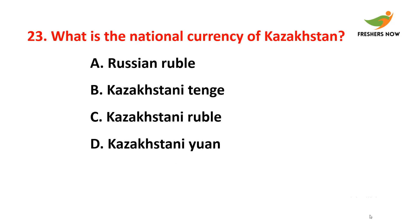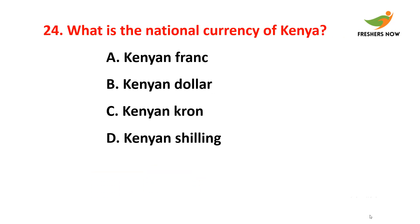Twenty-first question: What is the national currency of Germany? The answer is option B — Deutsche mark. Twenty-second question: What is the national currency of Ghana? The answer is option D — Ghanaian cedi.